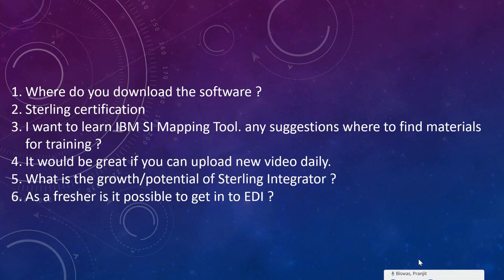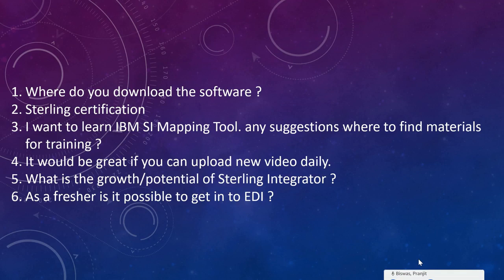To answer your question — if you want to know where you can download the software and are willing to spend money — there are options. One place is called Passport Advantage. If you do a Google search for Passport Advantage, it's an IBM-hosted software subscription website where you can create your own login credentials, purchase the software, download the installation files, and use it.